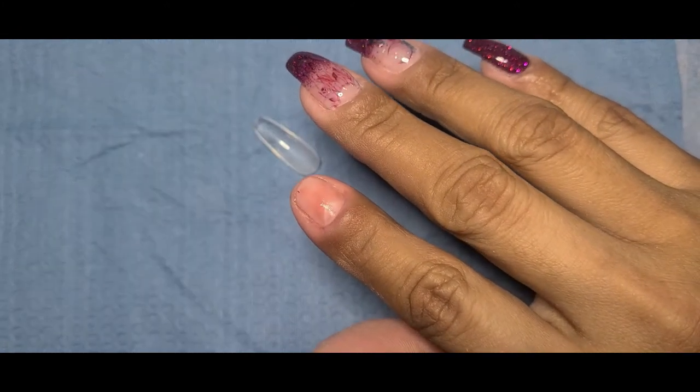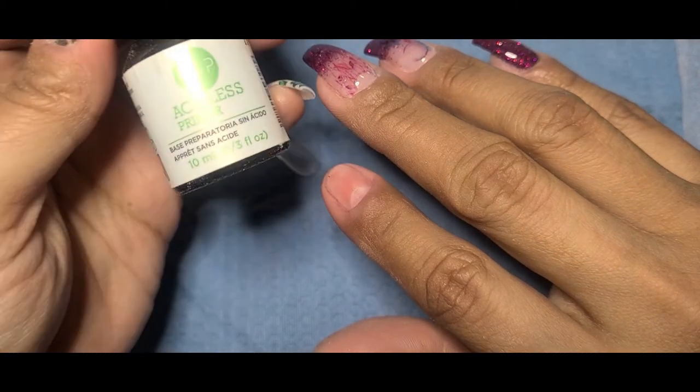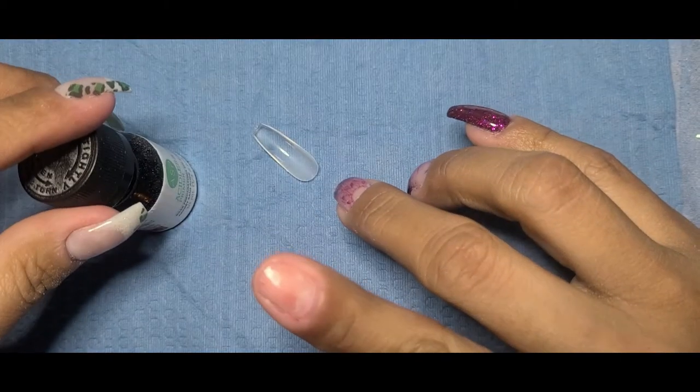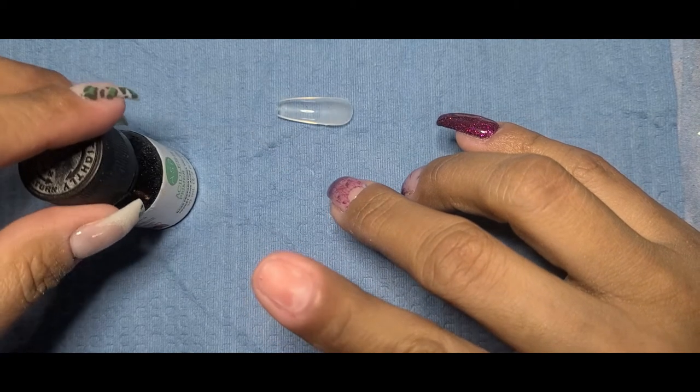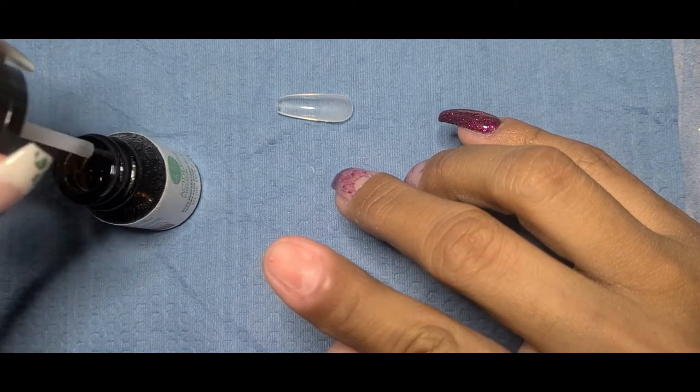So now I'm going to go in with my dehydrator. It's an acidless primer from Sally Beauty. It does dehydrate, I know it says primer, but it does dehydrate the nail bed, as you'll see here in just a second. Whenever I apply it, it starts to dehydrate it relatively quickly.